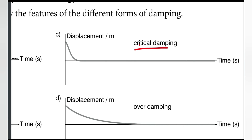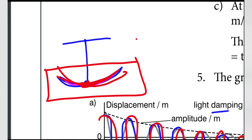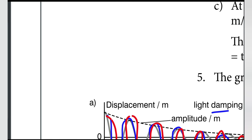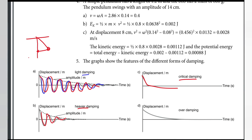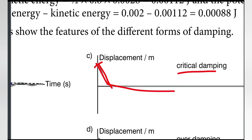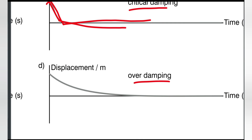In critical damping, the displacement returns to the equilibrium in the shortest possible time without overshooting. This is the fastest return to equilibrium without oscillation.